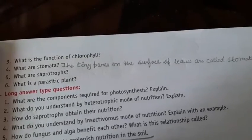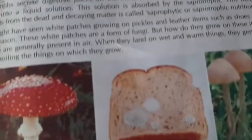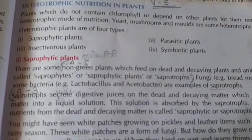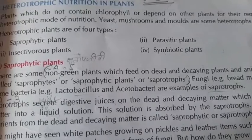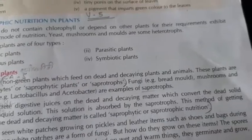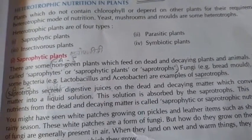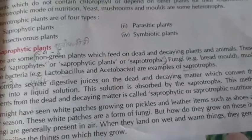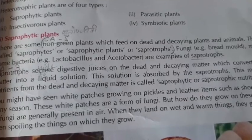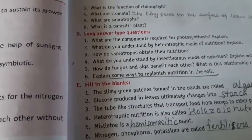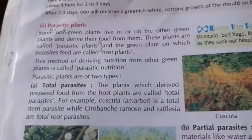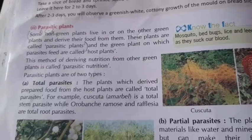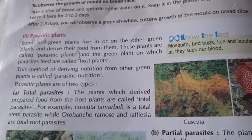What are saprotrophs? On page 9, under saprophytic plants: non-green plants which feed on dead and decaying plants and animals are called saprophytic plants or saprotrophs. That is your answer. What is a parasitic plant? On page 10: some non-green plants live on other green plants and derive their food from them — these are called parasitic plants.